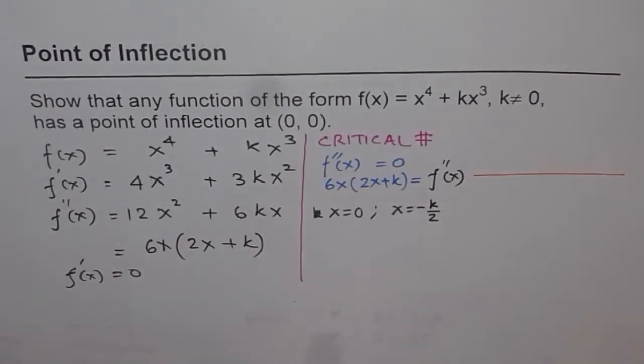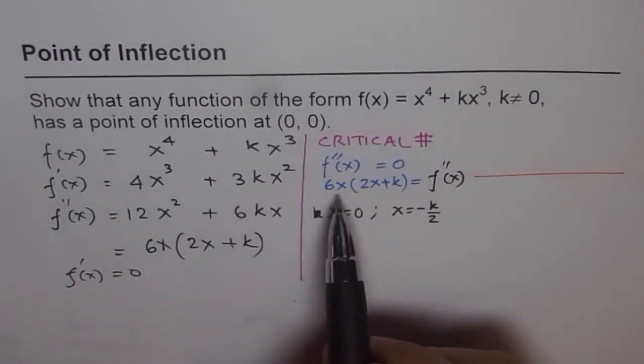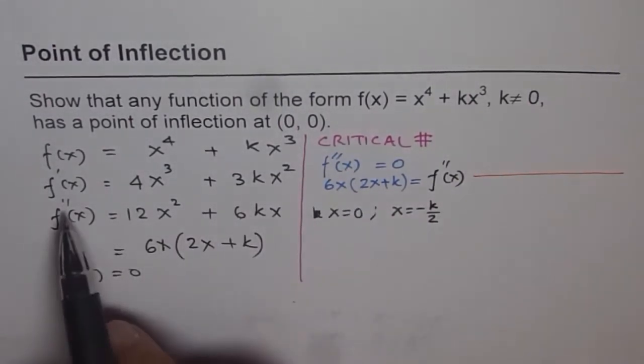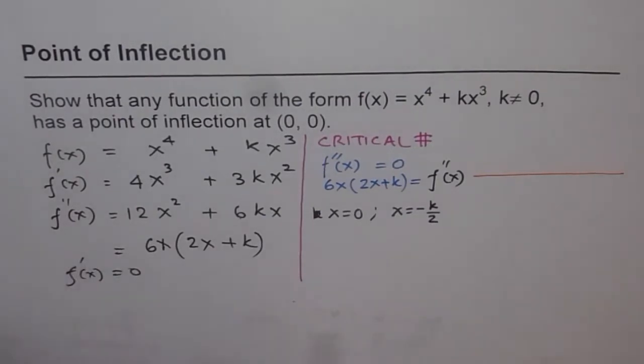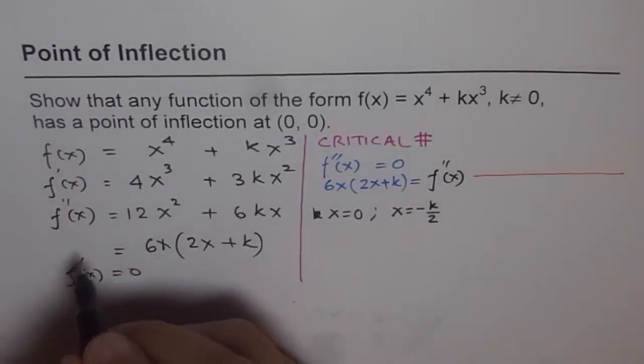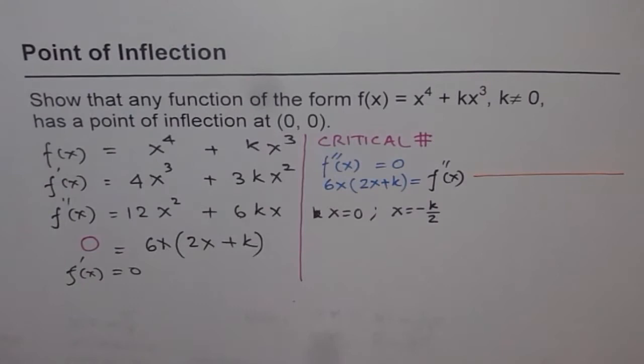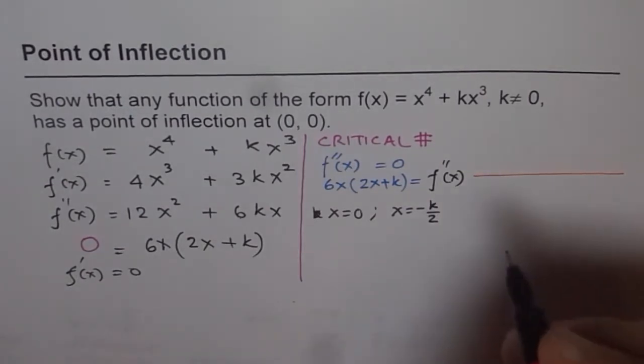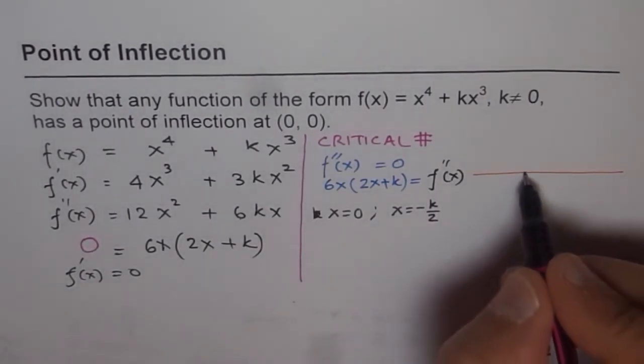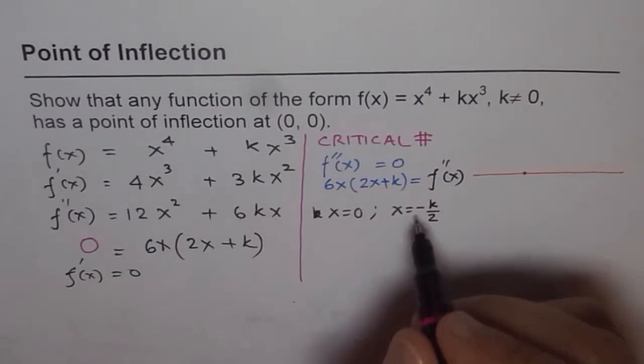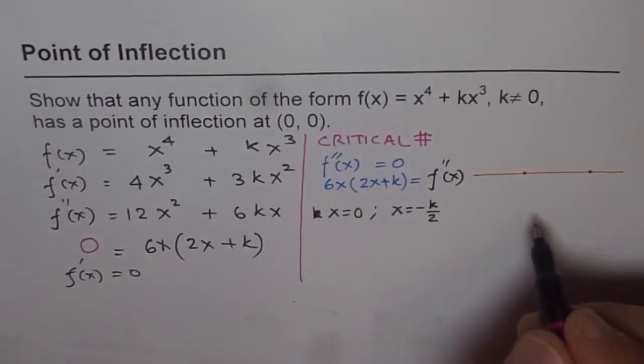And the other is at x = -k/2. So these are the two points when f''(x) could be 0. So let's plot these two points here. So we have at 0 and -k/2.